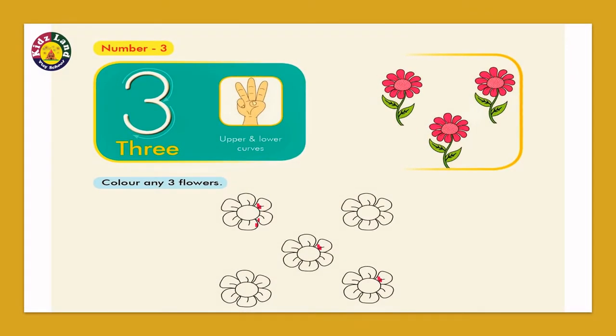Number 3. How do we show with our fingers? Pointer finger, middle finger, and the ring finger. So it is three fingers up, and close the other fingers. It is number 3.